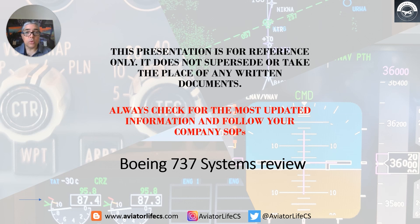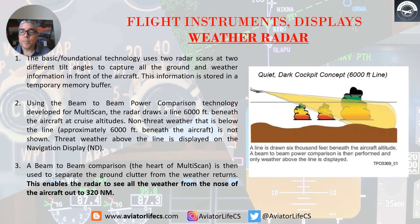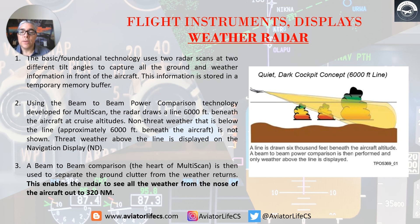The basic foundational technology uses two radar scans at two different tilt angles to capture all the ground and weather information in front of the aircraft. This information is stored in a temporary memory buffer. Using the beam-to-beam power comparison technology, the radar draws a line 6,000 feet beneath the aircraft at cruise altitudes.